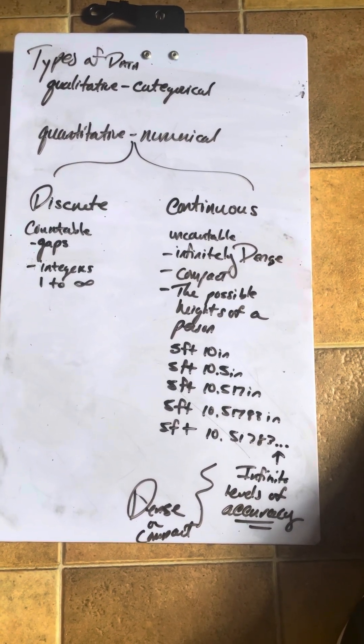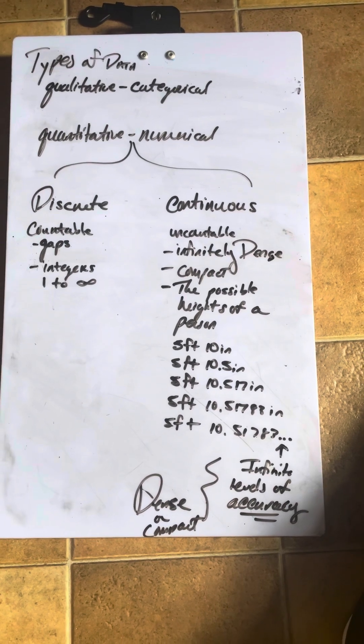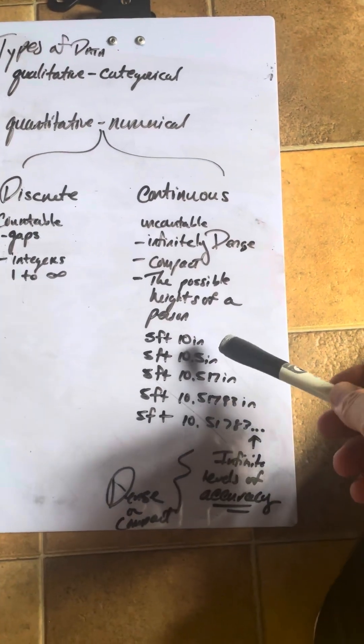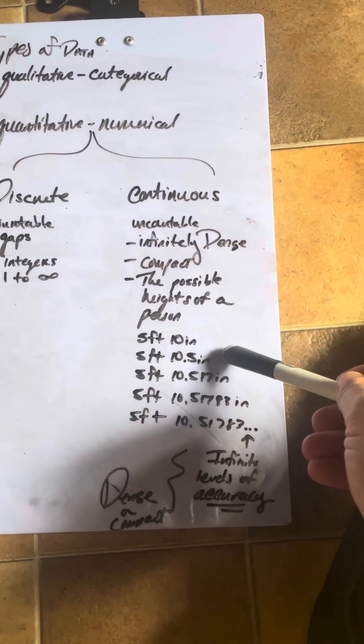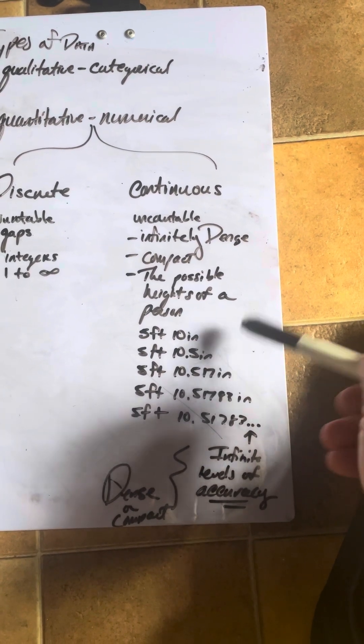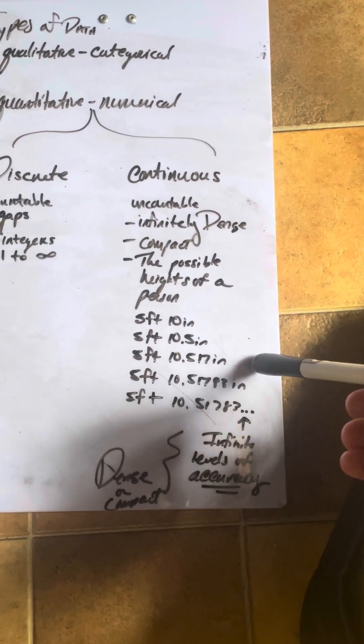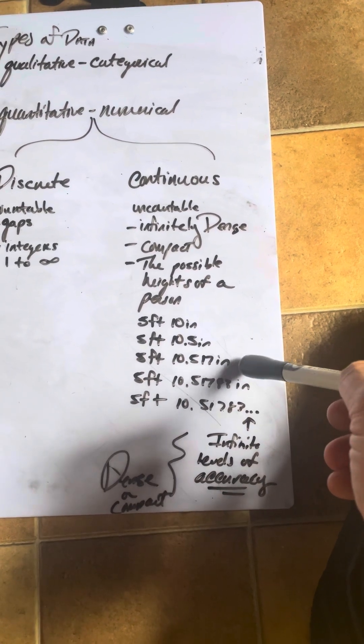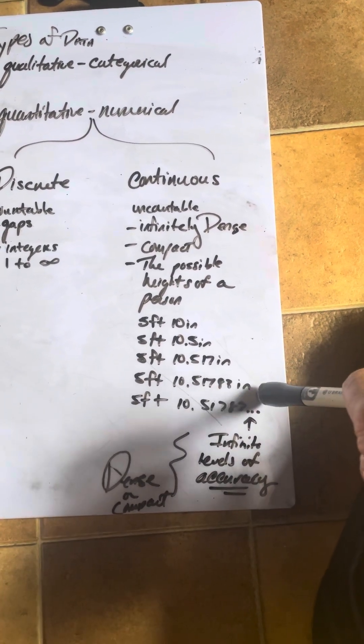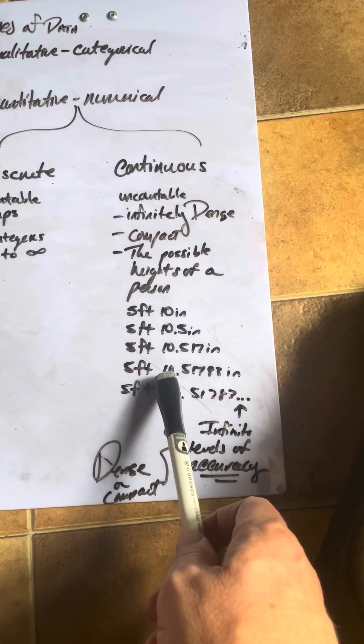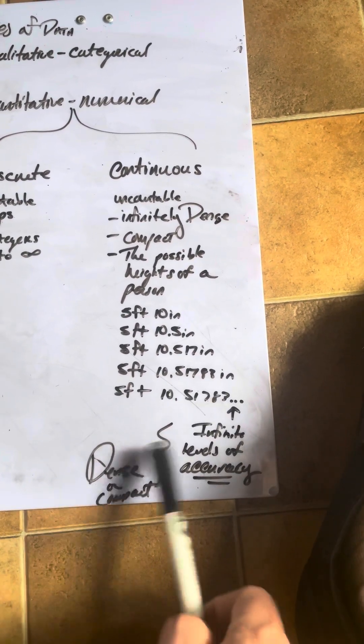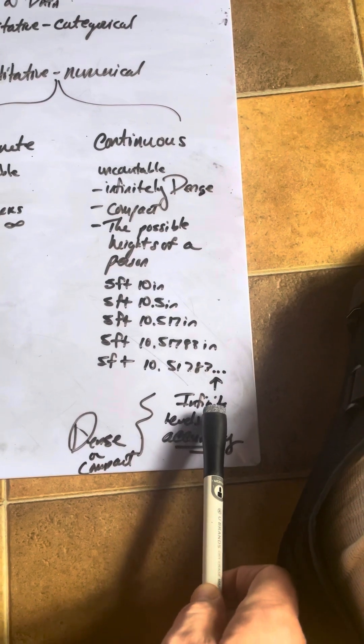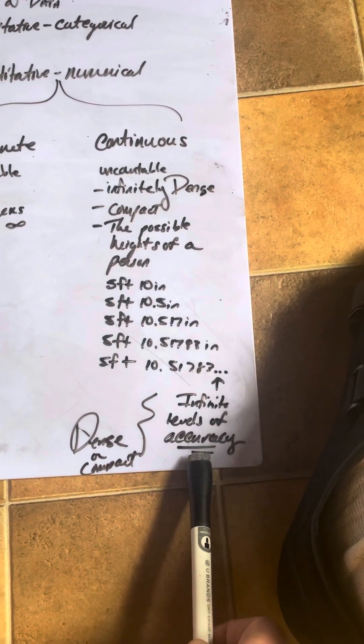The possibility of heights of a person. So just giving you some examples here, five feet 10 inches. Well, we might need to refine that. So five feet 10.5 inches. Well, we might need to refine that, five feet 10.517 inches. And my point is that you can get to infinite levels of accuracy. In other words, the number line is dense or compact.